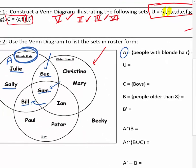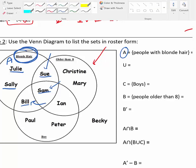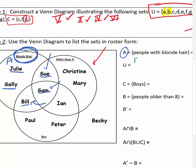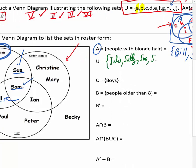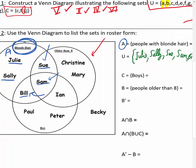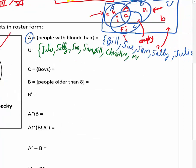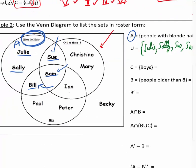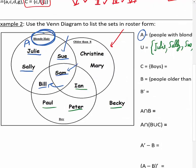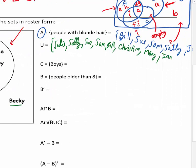The universal set contains every name in the whole rectangle: Julie, Sally, Sue, Sam, Bill, Christine, Mary, Ian, Peter, Paul, and Becky. And set C — the boys — includes: Sam, Bill, Ian, Paul, and Peter.